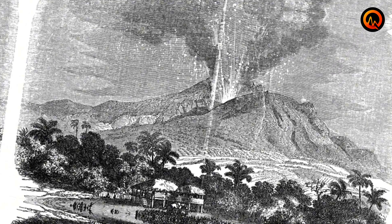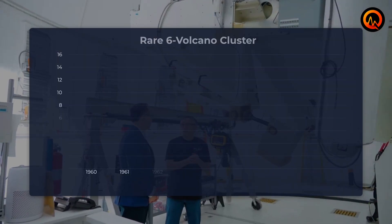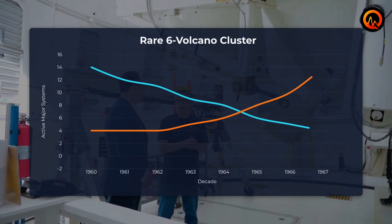Before that, the 1880s saw a comparable pattern, coinciding with significant solar activity cycles.